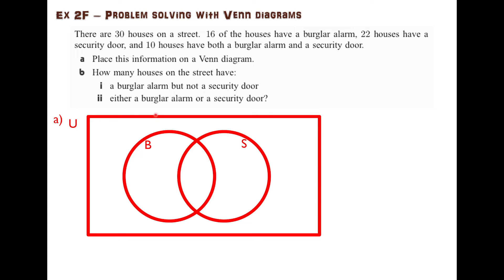I will call them B for burglar alarm and S for security door. U is the big rectangle and everything that's inside it. Now we can start going through these facts and trying to understand what they mean.